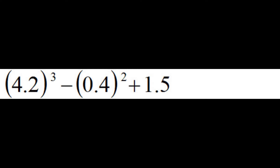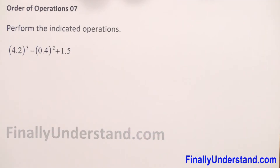We have decimal numbers, and the order of operations for decimals is the same as for whole numbers and fractions. First we do parentheses, next exponents, then multiplication, division, and finally addition and subtraction.